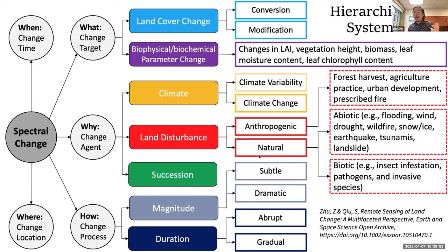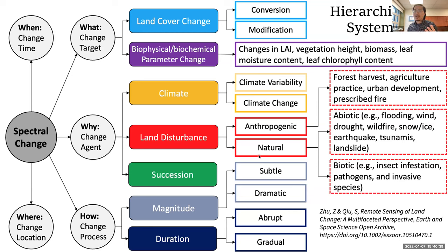In another aspect, to answer the why, we can identify the change agent. It can be from climate — climate change or climate variability — or from land disturbance, which is one of the major drivers. For example, there are anthropogenic disturbance and natural disturbance. In natural disturbance there are biotic and abiotic disturbance types. Vegetation succession can also be a major change agent. And for the how, we are trying to answer the question of how these changes actually happen — the change process. We can define this based on the magnitude of the change, for example, whether it's a subtle change or a dramatic change, or the duration, whether it's abrupt or gradual.